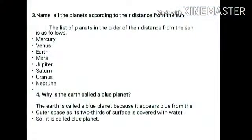Third question: name all the planets according to their distance from the Sun. The list of planets in order of distance from the Sun is as follows: Mercury, Venus, Earth, Mars, Jupiter, Saturn, Uranus and Neptune.